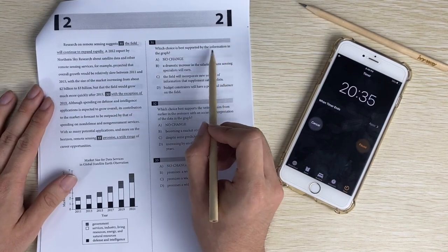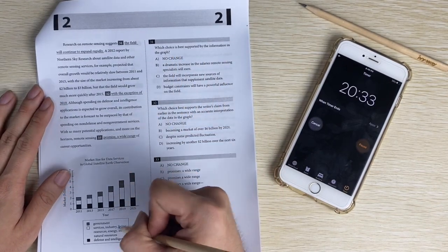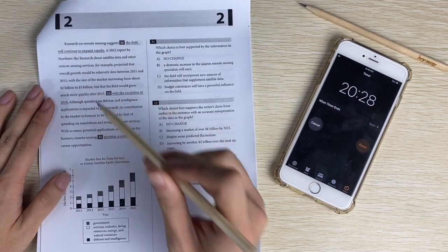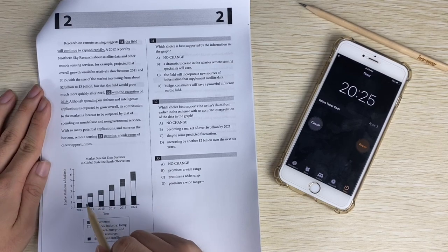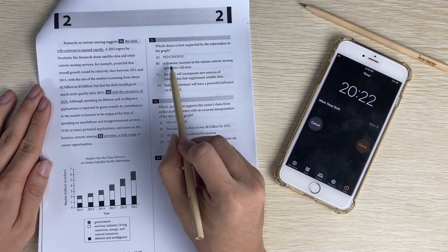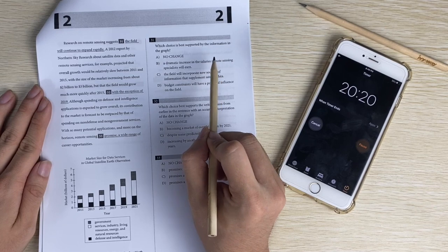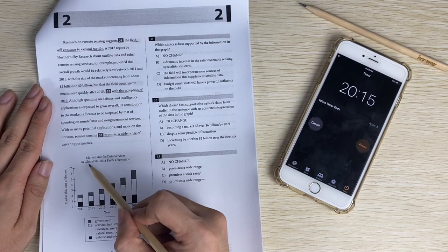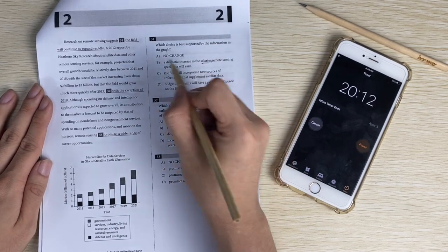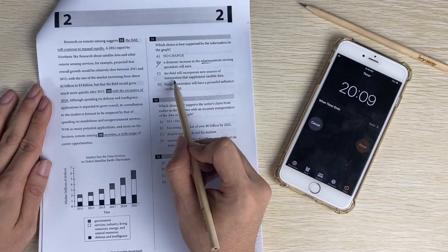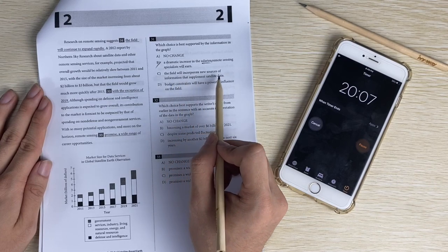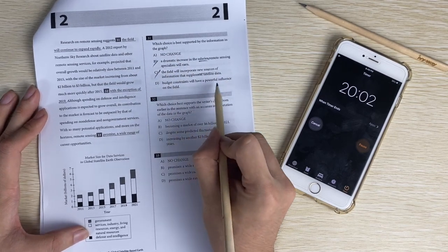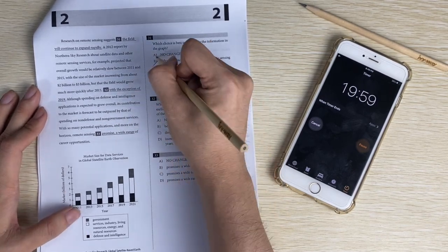All right. Support information in the graph. So I look at the graph. Research on remote sensing suggests that the field will continue to expand rapidly. That looks right. Dramatic increase in the salaries - so salaries, but the question is asking about the market size, which is not the salary. So B is wrong. Field will incorporate new resources - there are no new resources. Budget constraints have powerful influence - not about budget. So the answer is A.